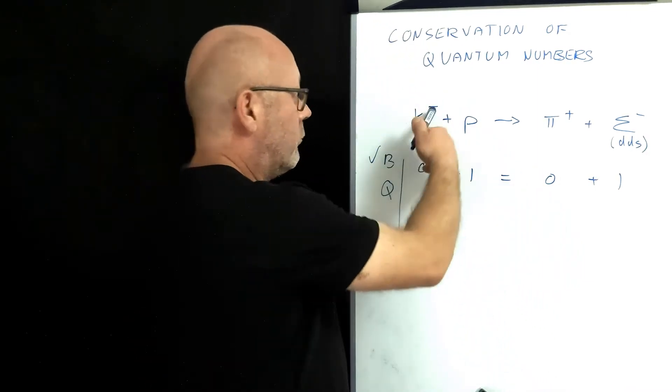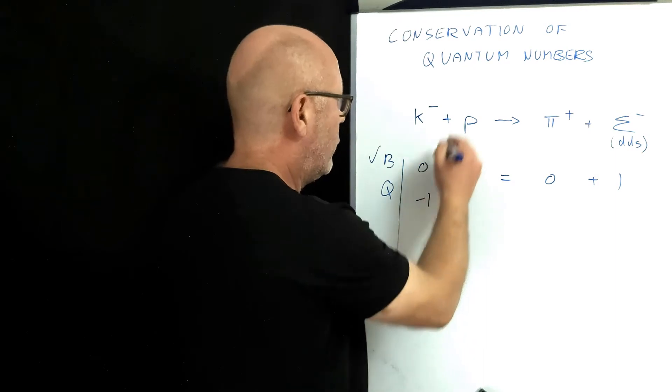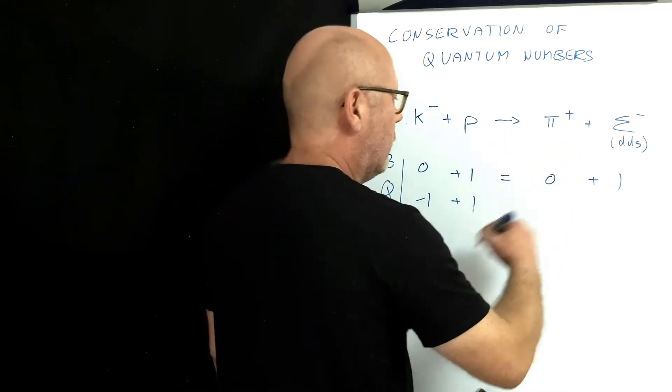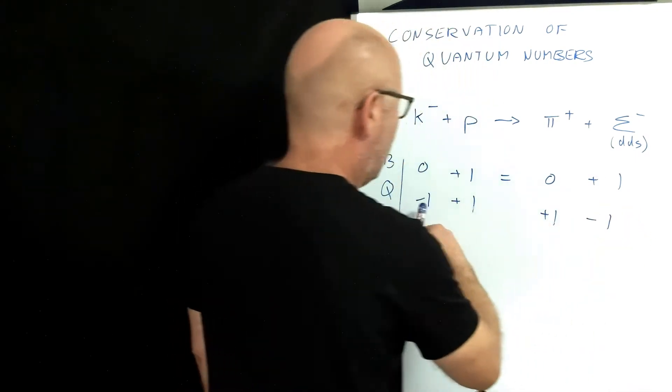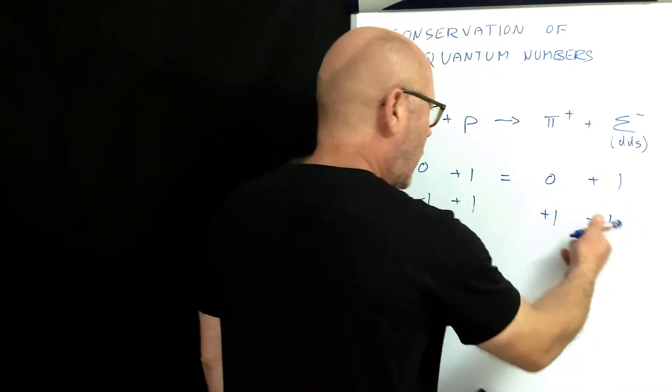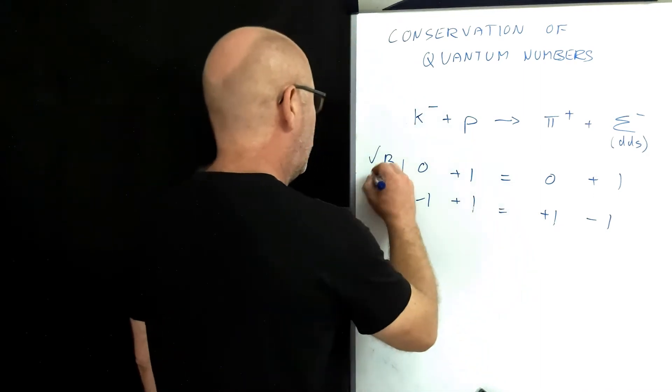Charge. Negative charge, minus one. Proton has got a positive charge. The pion, plus one. The sigma minus, negative one. Minus one, plus one, is equal to plus one, negative one. Check!